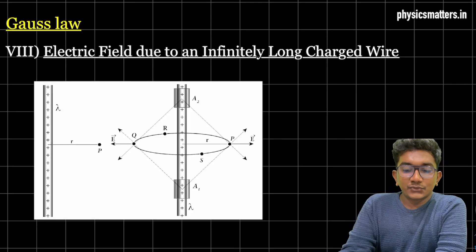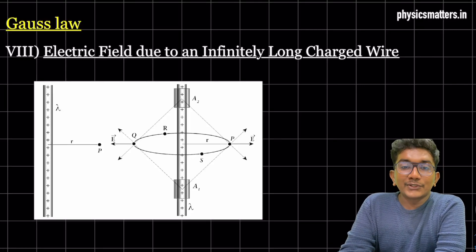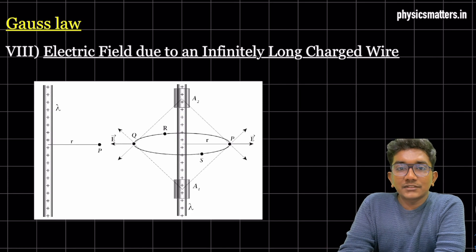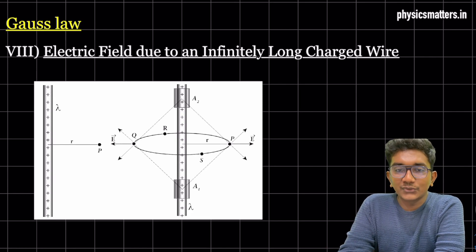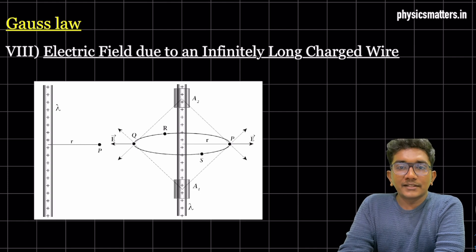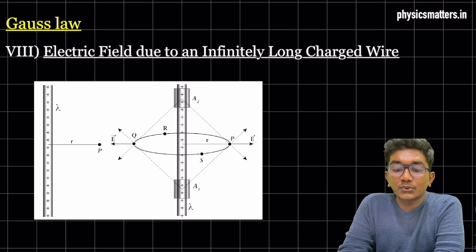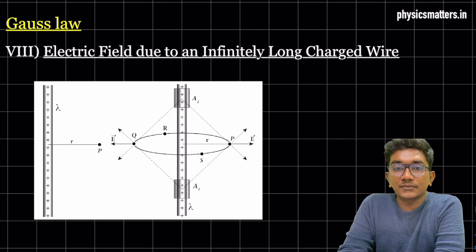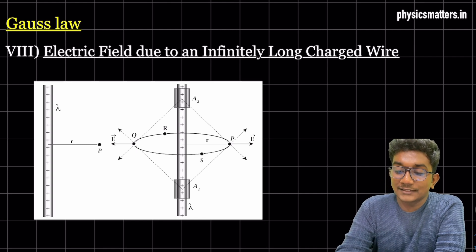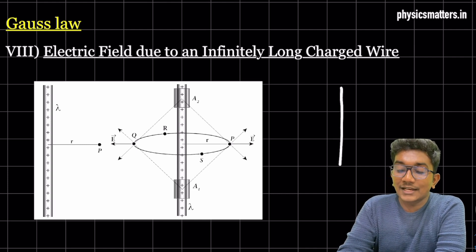Hello everyone, now we are going to talk about Gauss's Law applications. There are three to four derivations we have to do, so we will do them one by one. The first application is the electric field due to an infinitely long charged wire — I simply call it a line of charge.